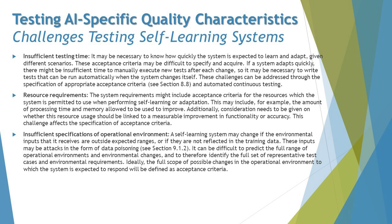The next challenge is insufficient testing time — a common challenge in all types of systems, including AI-based ones. It may be necessary to know how quickly the system is expected to learn and adapt given different scenarios. These acceptance criteria may be difficult to specify. If a system adapts quickly, there might be insufficient time to manually execute new tests after each change, so it may be necessary to write tests that can be run automatically when the system changes itself. These challenges can be addressed through specification of appropriate acceptance criteria and automated continuous testing.